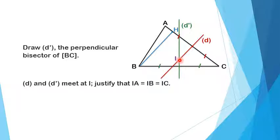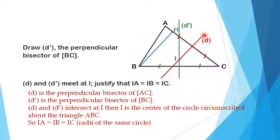I is the intersection of the perpendicular bisectors, and we know that the point of intersection of the perpendicular bisectors is the center of the circle circumscribed about the triangle ABC. Since I is the center of the circle, IA, IB, and IC are radii of the same circle. We know that radii of the same circle are equal, and that's how I proved that IA equal to IB equal to IC.